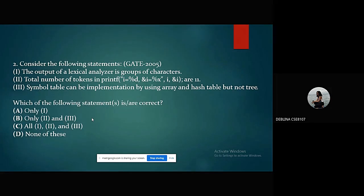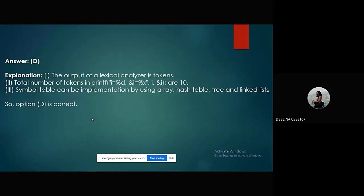Here is our second question. Consider the following statements. Statement 1: the output of a lexical analyzer is groups of characters. Second statement: total number of tokens in the statement printf("i is equals to %D and i is equals to %X", i, %i) are 11. Third statement: symbol table can be implemented by using array and hash table, but not tree. Which of the following statements are correct? Option A, only one. Option B, only two and three. Option C, all. Option D, none of the above. And the answer is option D.